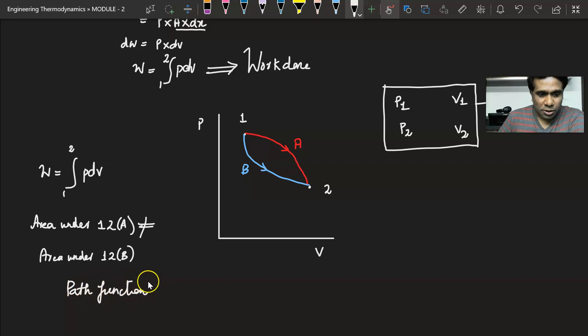Because it depends on the path taken, and that is why we see that work is a path function and it completely depends on the path that is being taken. It does not clearly depend on the end state, or we cannot find out the value of work done if we know just the end state. We should know what is the path being followed.